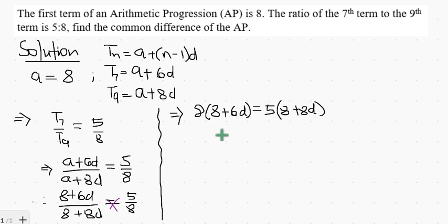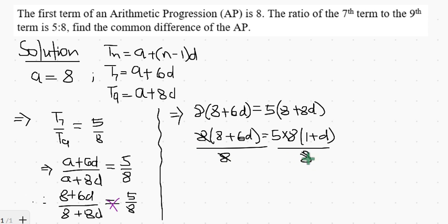Not to work with big numbers, I can factor out the 8 that is common at the right-hand side. I can divide both sides by 8 since 8 is common to both sides. So we're left with 8 plus 6d equal to 5 times 1 plus d. When you open the bracket at the right-hand side, the 5 would multiply the 1 and the d, so that's 5 plus 5d. Now let's collect like terms.